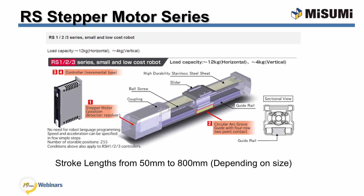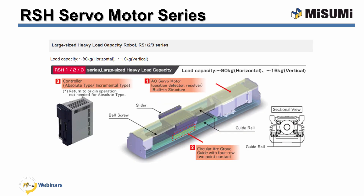The stepper motor version of the RS is configurable in lengths from 50 to 800 millimeters and can carry loads up to 12 kilograms horizontally. The RS H Series has all the same features as the RS but includes a servo motor for higher precision, higher maximum speeds, and higher load carrying capabilities. The RS H can carry a load up to 80 kilograms horizontally.